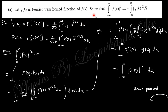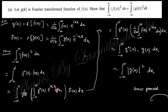The next question says: let g(k) be the Fourier transform of f(x), and show that the integral from −∞ to +∞ of |f(x)|² dx equals the integral from −∞ to +∞ of |g(k)|² dk. Since g(k) = (1/√2π) ∫ f(x) e^(ikx) dx and f(x) = (1/√2π) ∫ g(k) e^(−ikx) dk, the left-hand side involves f*(x), the complex conjugate. Substituting the expression for f*(x), rearranging and using the fact that the inner integral gives g(k), you obtain |g(k)|² — and finally the equality is established.